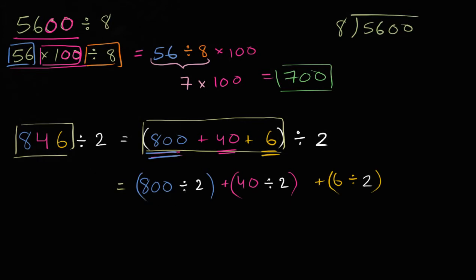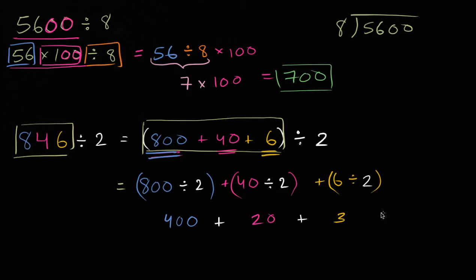800 divided by 2 — you should do it in your head. This is 800 divided by 2, you're going to get 400. 4 tens divided by 2 is going to be 2 tens, or 20. And then 6 divided by 2 is 3. So you are left with 400 plus 20 plus 3, which of course is equal to 423.